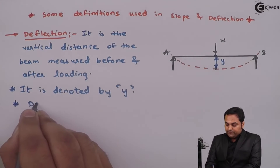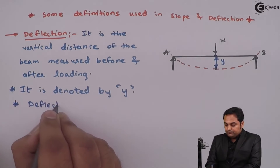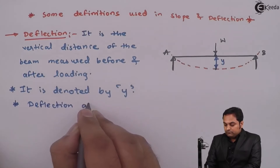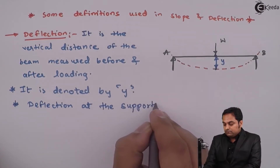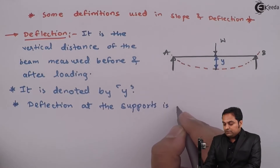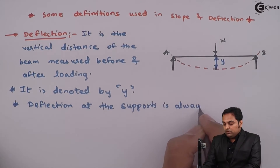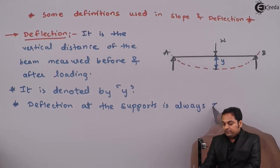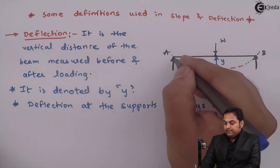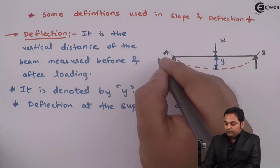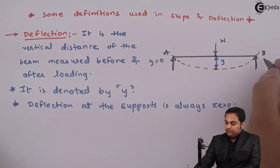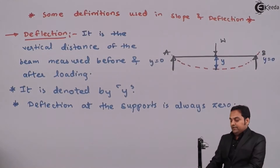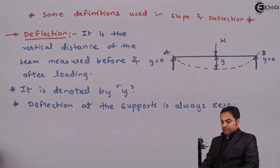Next, deflection at the supports is always zero. At A and B the deflection would be zero, so Y is equal to zero at A and B respectively.